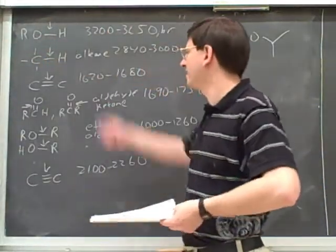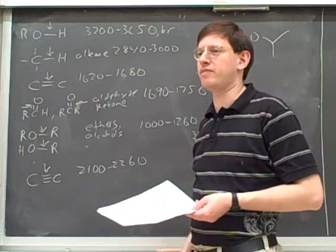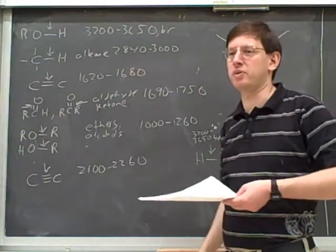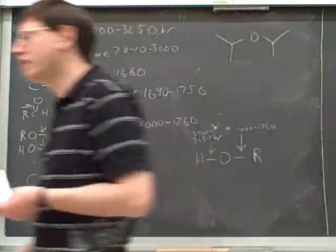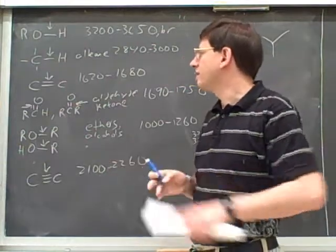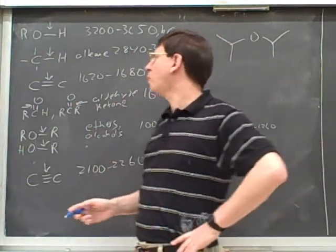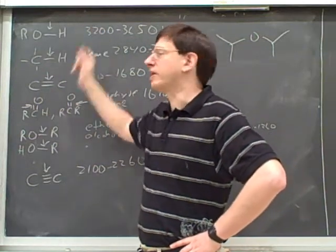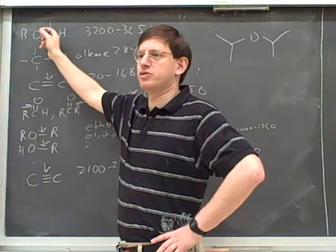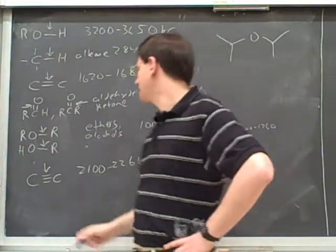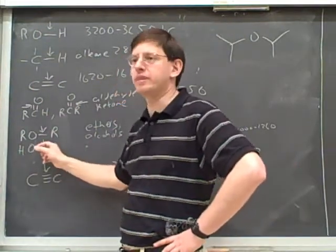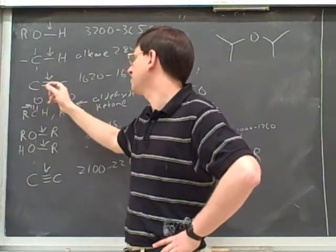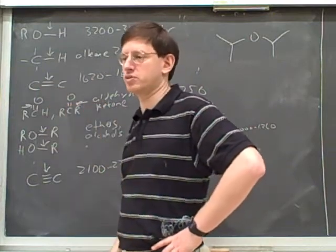In order to do this problem, you had to have a lot of absorptions memorized. These are all the different absorptions that we've had to use so far for the homework. Notice that when I wrote these, I don't just write the functional group — I point to the bond that's absorbing. Because I can't just say that alcohols absorb here, since only one of the bonds in the alcohol absorbs here. The OH bond absorbs here, whereas the oxygen-carbon bond absorbs here. You have to pay attention not just to the functional group, but to which bond in the functional group each of the absorptions refers to.